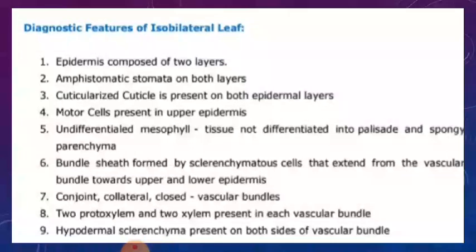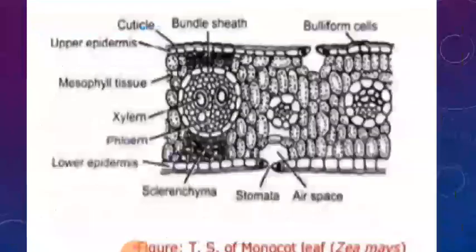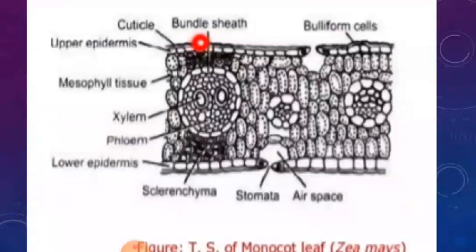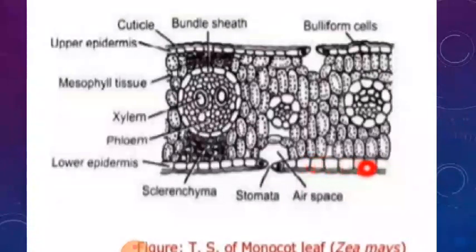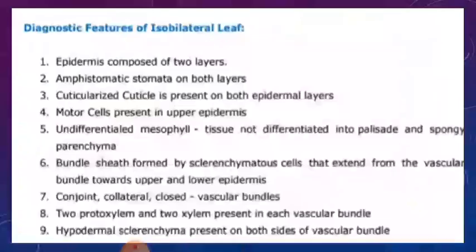The cells are thickened on the free side where silica and cutin are deposited, forming a distinct cuticle. The upper epidermis is on the upper side and the lower epidermis is on the lower side, forming the outer coating of the leaf on both surfaces.